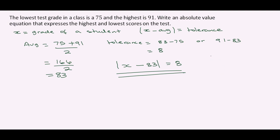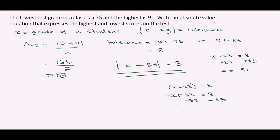Let's prove it. For x minus 83 equals 8, we add 83 to both sides and get x equals 91. For the second equation, minus x plus 83 equals 8, we subtract 83 from both sides giving minus x equals minus 75, so x equals 75. This confirms the highest grade is 91 and the lowest is 75.